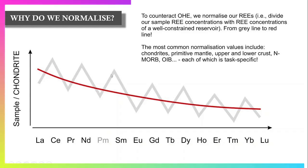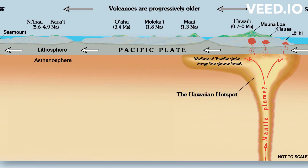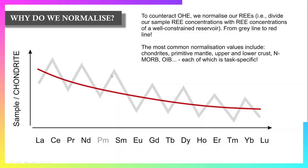This is done by dividing our unknown sample, or sample under investigation, rare earth element concentrations by the rare earth element concentrations of a well-constrained reservoir, such as mid-oceanic ridge basalt, oceanic island basalt, chondrites, primitive mantle, and many others.